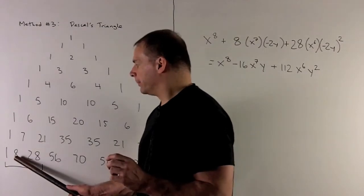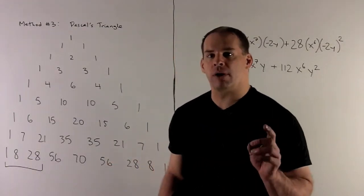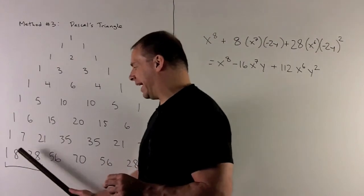So, we're interested in the eighth power, so I look for the 8. Then, if I want the first three terms, the binomial coefficients are going to be 1, 8, and 28.